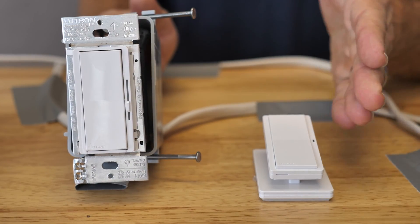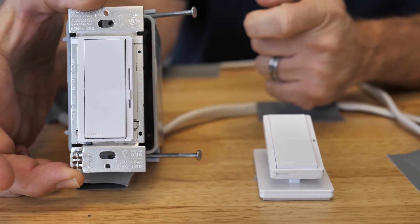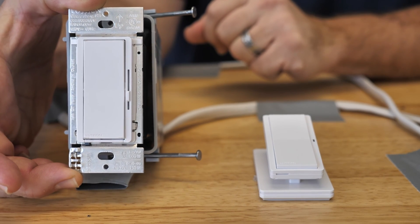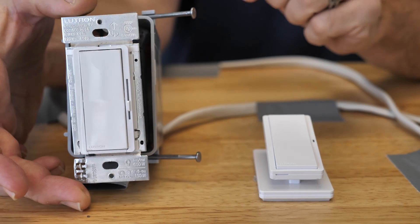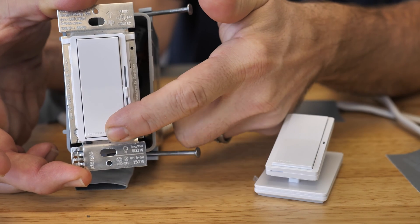So when pairing the new paddle control, make sure you go to the main controller switch. You cannot associate to an accessory switch with any Cassetta product. So let's go ahead and do it. We're going to hold our dimmer in the off position for seven seconds.